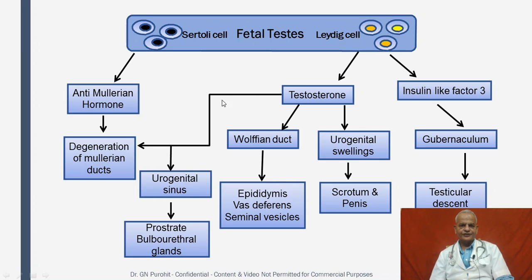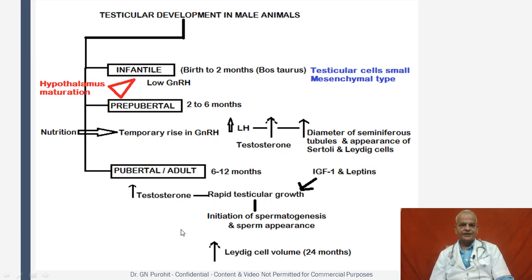Testosterone also affects the urogenital sinus, from which the prostate and bulbo-urethral glands develop. Testicular development in male animals occurs in three stages: the infantile stage, the pre-pubertal stage, and the pubertal or adult stage.